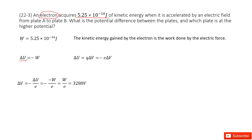Next, how much did the potential energy change? We use charge times the potential difference. The charge is one negative fundamental charge because this is an electron, so we write it as negative e. We can get delta V from this equation as negative delta U divided by e, and replacing delta U with negative W, we get the function. Inputting all the given quantities, we get the answer.